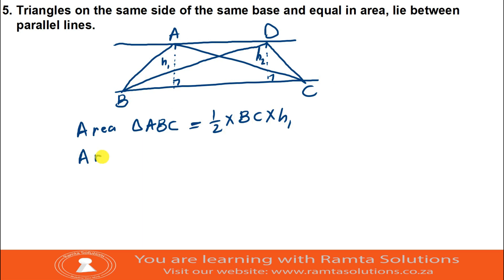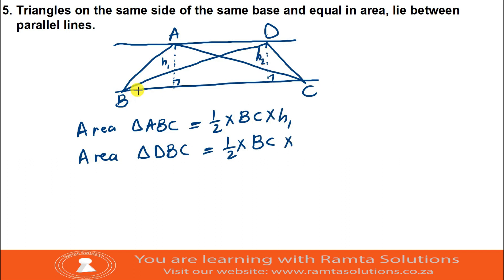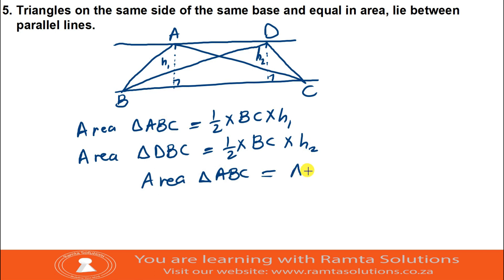Area of triangle DBC is still half base times height. The base is BC again, but the height is H2. However, we have said that area of triangle ABC is equal to area of triangle DBC. We said triangles on the same side of the same base are equal in area - we must prove that they lie between parallel lines.